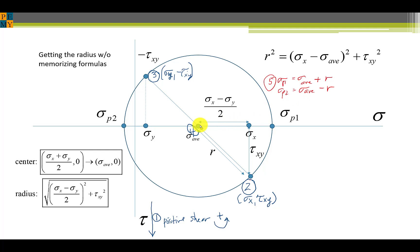The two principal stresses are given by sigma average plus the radius. So here's sigma p1, the maximum principal stress. And if we subtract the radius from sigma average we have sigma p2, the minimum principal stress. Now notice that these are 180 degrees apart. That means on the stress element they're orthogonal.